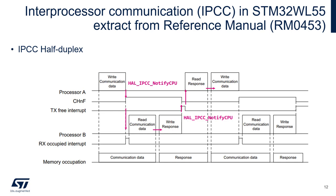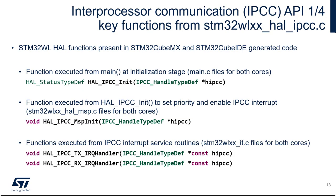Processor A reads the response, then writes new communication data, and calls HAL_IPCC_NotifyCPU again, raising the RX interrupt on Processor B. Within that interrupt, Processor B reads the data, writes a response, and triggers the TX Free interrupt on Processor A. This ping-pong operation can continue indefinitely — this is inter-processor communication in half-duplex mode.